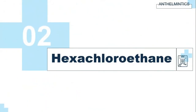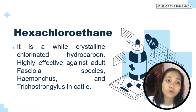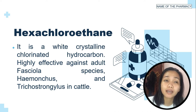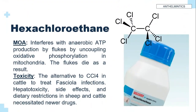The next example is hexachloroethane. Hexachloroethane is a white crystalline chlorinated hydrocarbon. It is highly effective against adult Fasciola species, Haemonchus, and Trichostrongylus in cattle. But it is ineffective against ruminant flukes and intestinal nematodes. Its mechanism of action: it interferes with anaerobic ATP production by flukes by uncoupling oxidative phosphorylation in mitochondria, and the flukes die as a result.